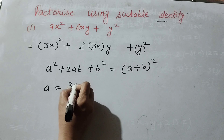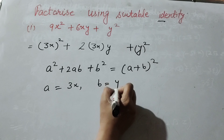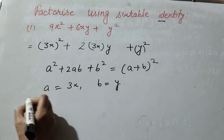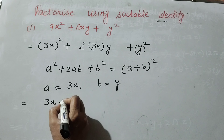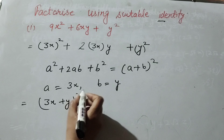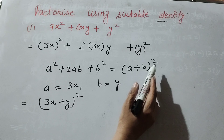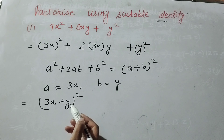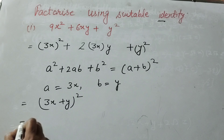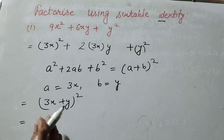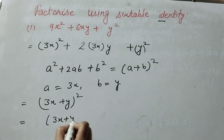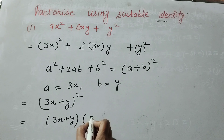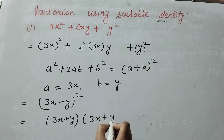So in this, a is equal to 3x and b is equal to y. It is equal to (a plus b) whole squared, so (3x plus y) whole squared. Since there is a power of 2, this term is written as two repeated factors: (3x plus y) multiplied by (3x plus y). These are the factors.